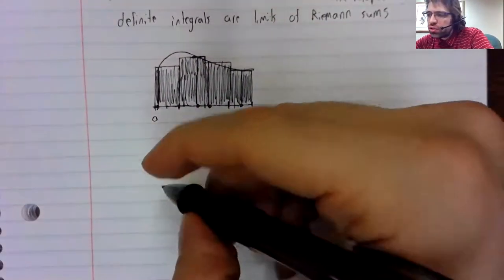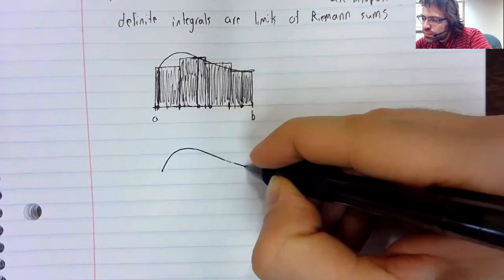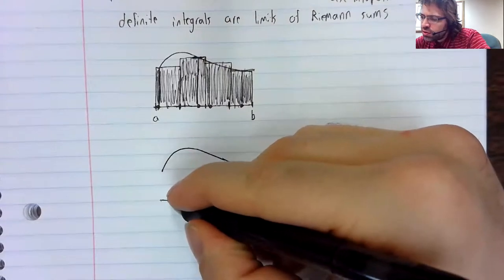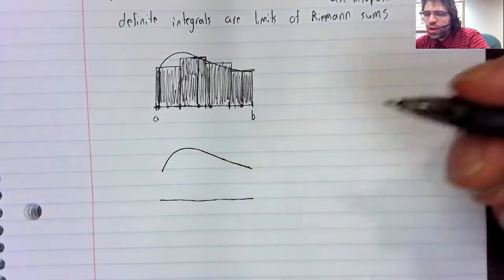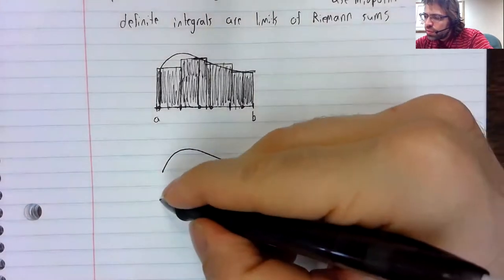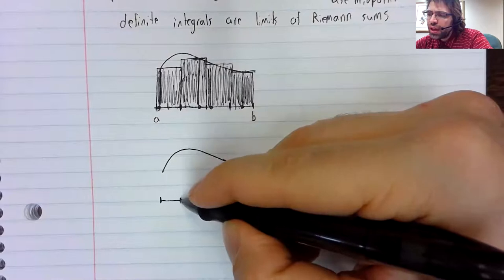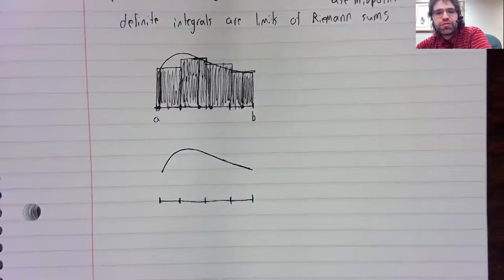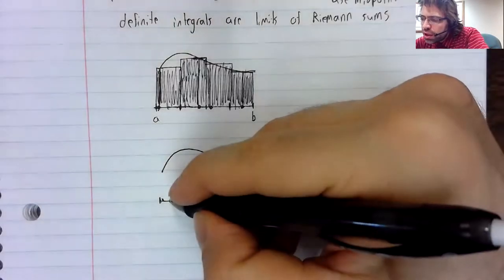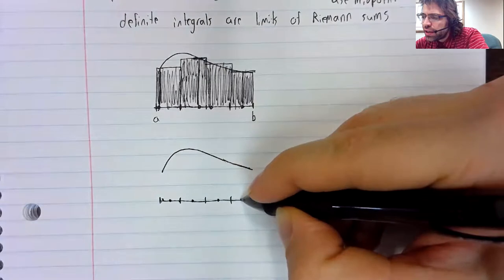So let's repeat this process. We have a function on an interval, and we're trying to approximate the area. We break the interval up into subintervals.